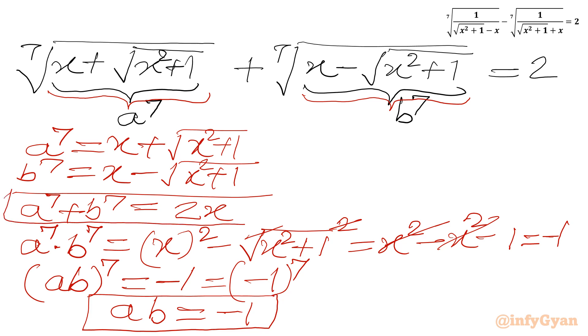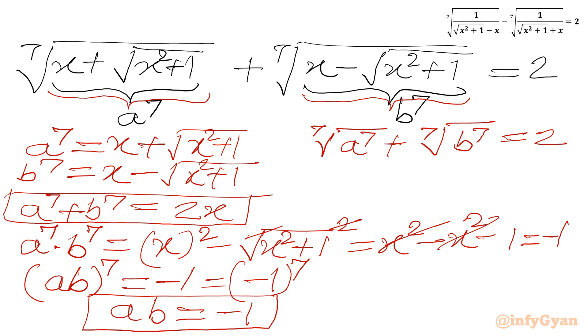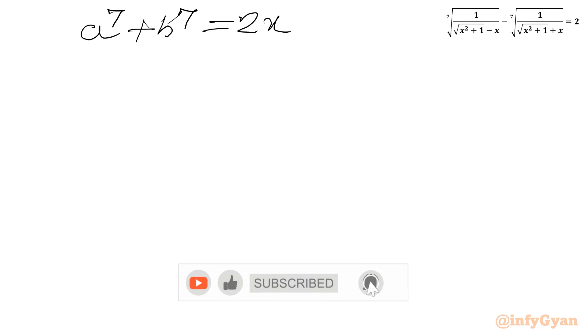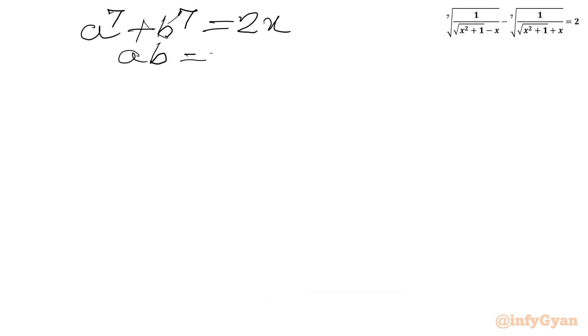So we have two important equations. We can write our original equation as 7th root of a⁷ plus 7th root of b⁷ equal to 2, which simplifies to a + b = 2. So our three key equations are: a⁷ + b⁷ = 2x, ab = −1, and a + b = 2.